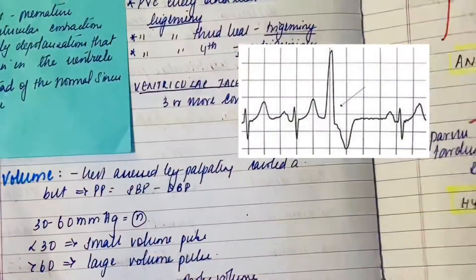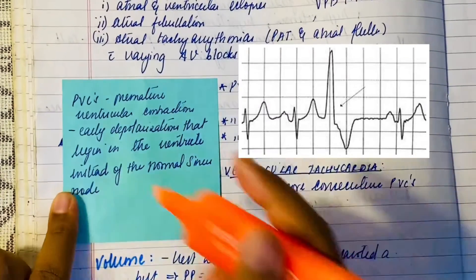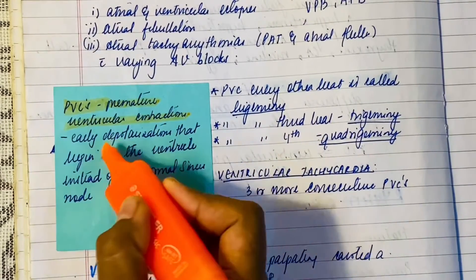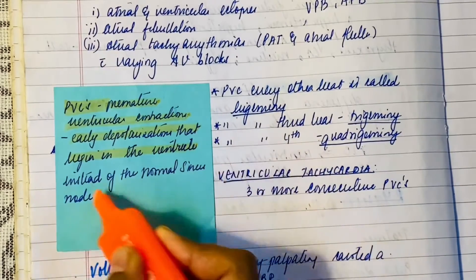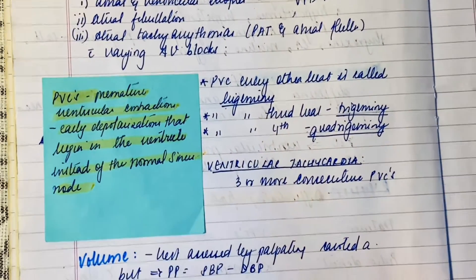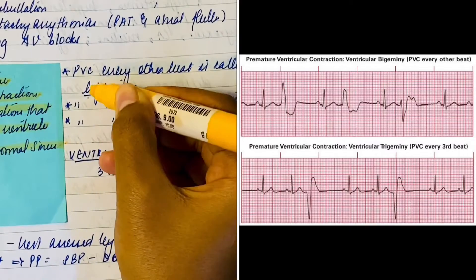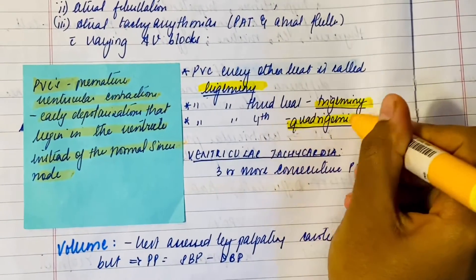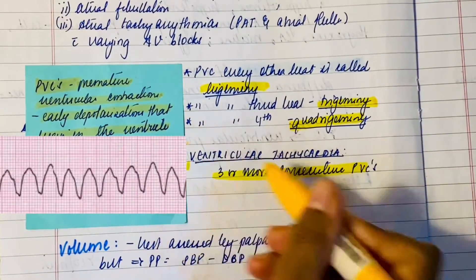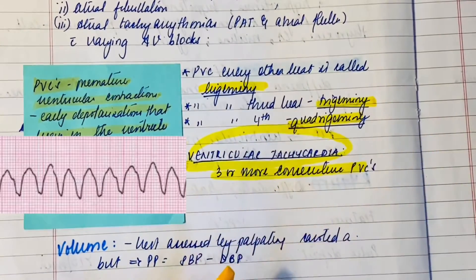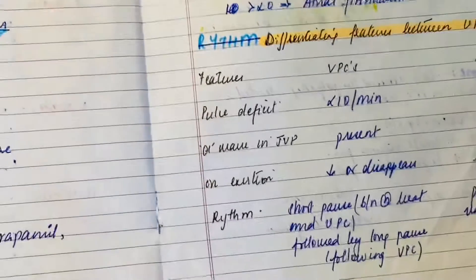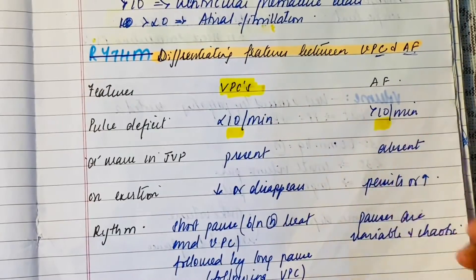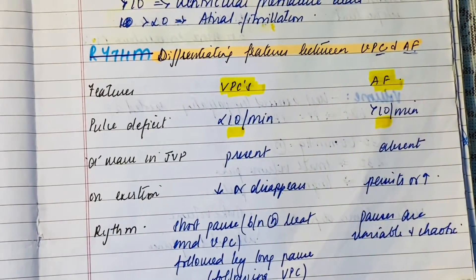Premature ventricular contractions (PVCs) are early depolarizations that begin in the ventricle instead of the normal sinus node. If they occur every other beat it's called ventricular bigeminy, every third beat is trigeminy, every fourth beat is quadrigeminy, and three or more consecutive PVCs is called ventricular tachycardia. If pulse deficit is less than 10 per minute, consider it a VPC; if more than 10 or even more than 20, it could be atrial fibrillation.